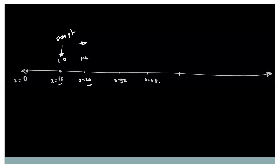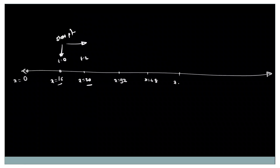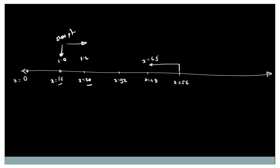After 48, the particle reaches 56. After that, the particle travels in the negative direction and comes back to the point x=48.